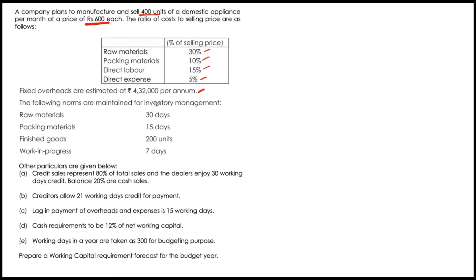Fixed overheads are estimated at Rs. 4,32,000 per annum. The following norms are maintained for inventory management: raw material 30 days, packing material 15 days, finished goods 200 units, and work in progress 7 days. Credit sales represent 80% of total sales, and dealers enjoy 30 working days credit. The balance 20% are cash sales. Creditors allow 21 working days credit for payment. Lag in payment of overheads and expenses is 15 working days. Cash requirements are to be 12% of net working capital. Working days in a year are taken as 300 for budgeting purposes.